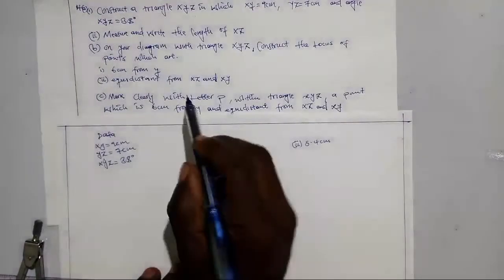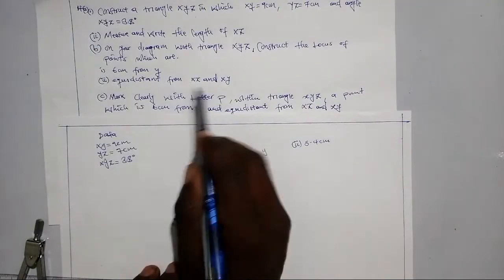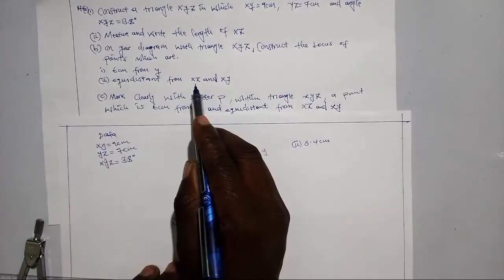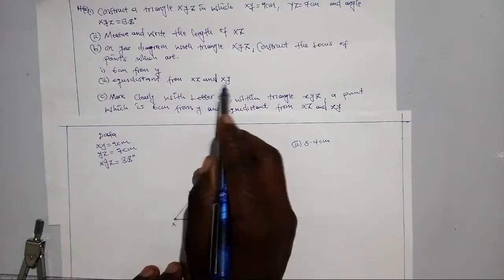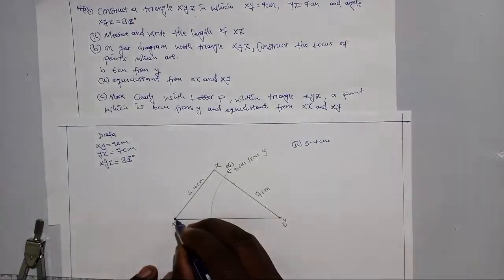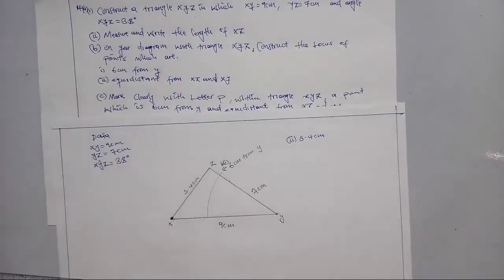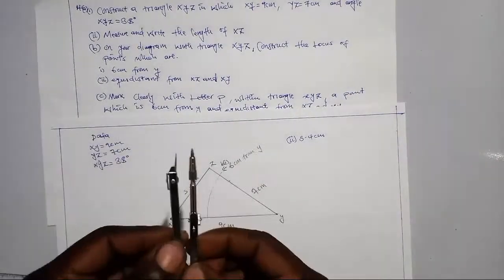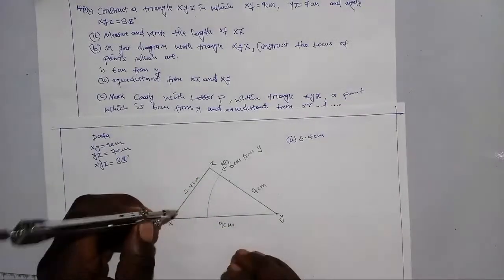To find the equidistant locus, check which letter appears most often in XZ and XY — it is X. So you stand at point X with your compass. Take any measurement with the compass and come to point X.